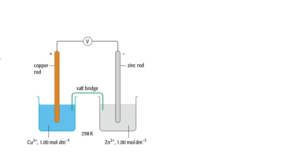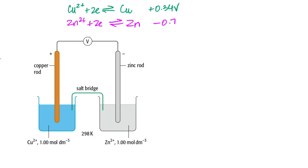Here's another example: a cell set up between zinc and copper electrodes, with two half cells, a salt bridge, and a voltmeter. The copper half equation is Cu²⁺ + 2e⁻ → Cu (E° = +0.34 V) and the zinc half equation is Zn²⁺ + 2e⁻ → Zn (E° = −0.76 V). To determine what happens, look at which value is more positive — that equation is favored to the right. So copper goes forward and zinc goes backward.